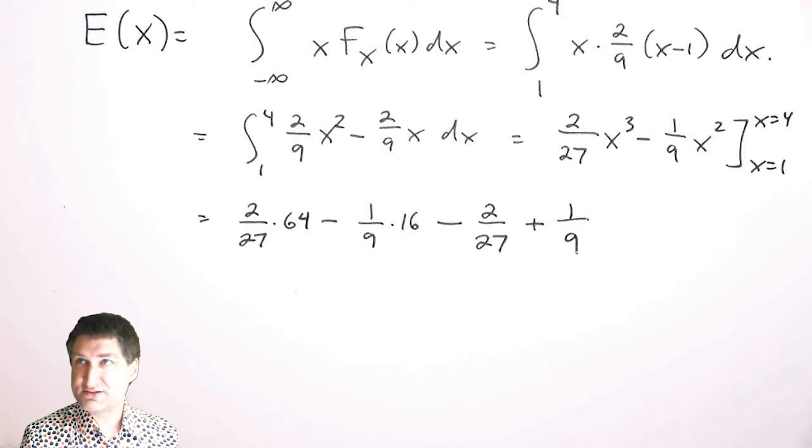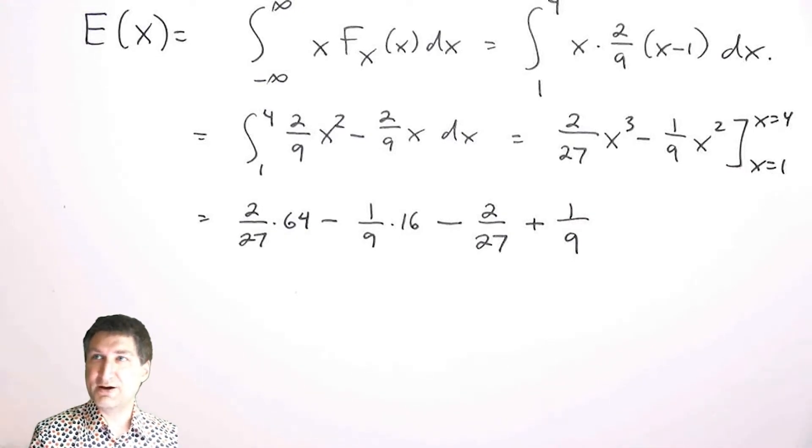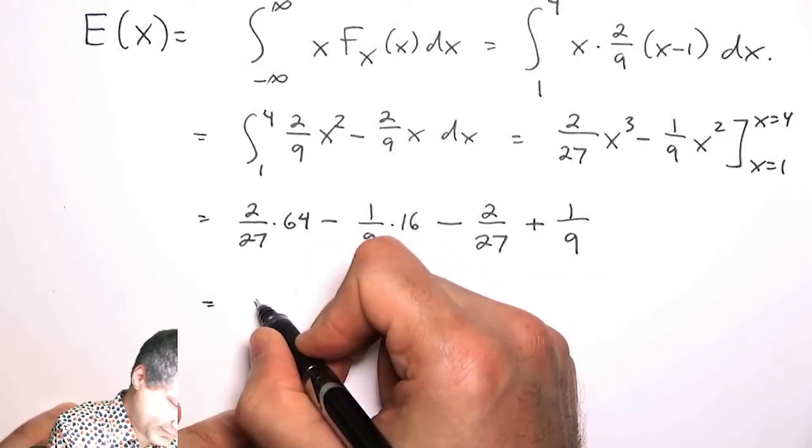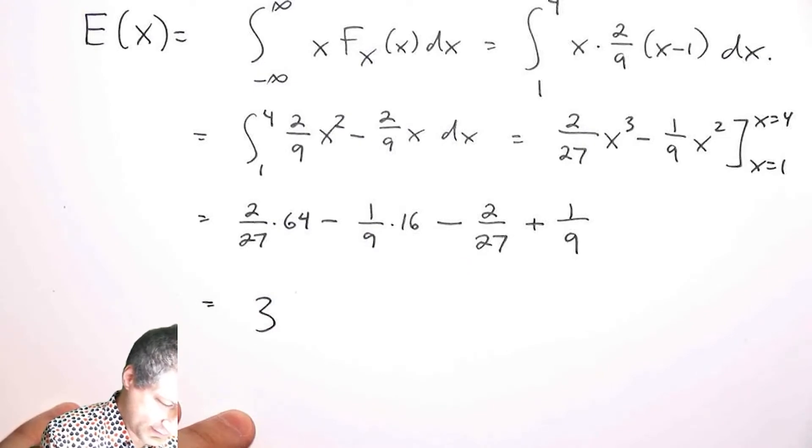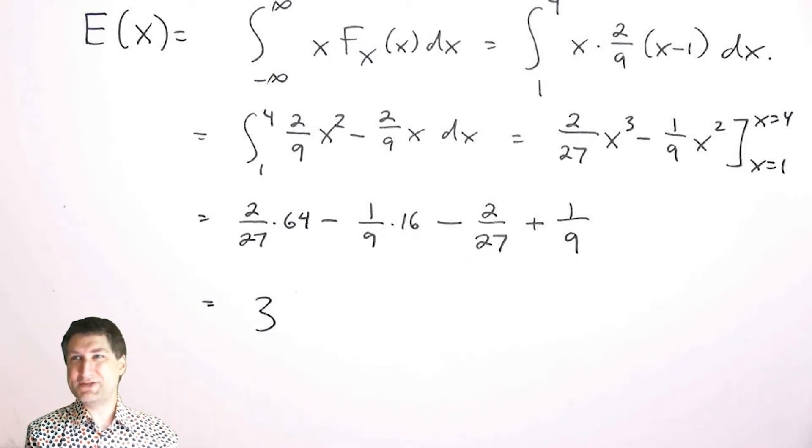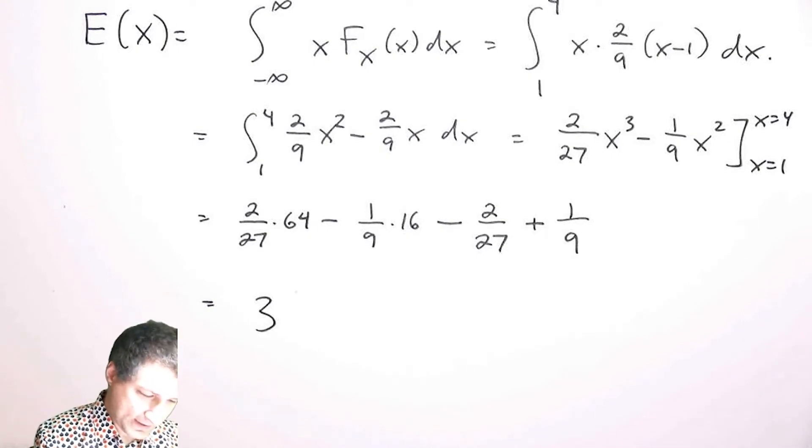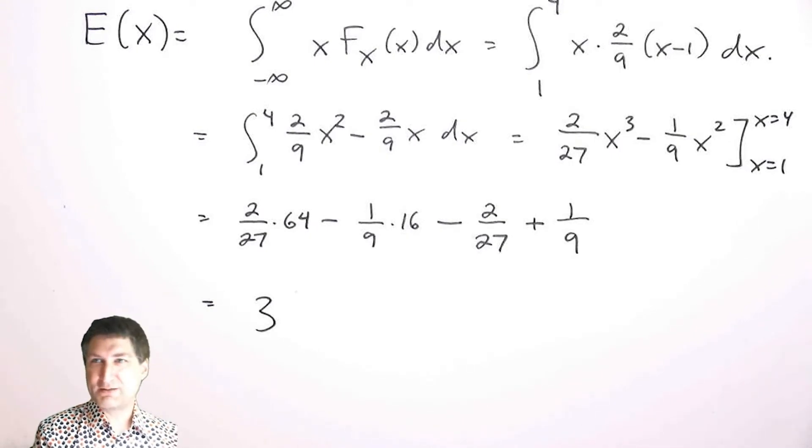If I was really excited about solving this, I would find that this all adds up to 3. I could do it, but I don't really want to—basically that would be the process to work out the number. So let's talk about the variance.